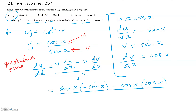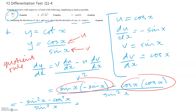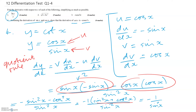The numerator factorises as minus one times (sin²(x) plus cos²(x)), all over sin²(x). Since sin²(x) plus cos²(x) equals 1, this simplifies to minus 1 over sin²(x), which equals minus cosec squared x. We have therefore proved that the derivative of cot(x) is minus cosec squared x.